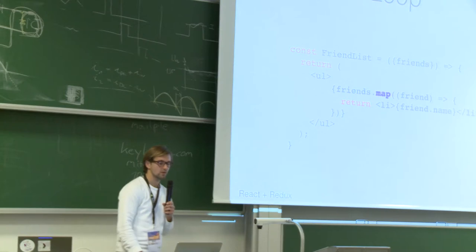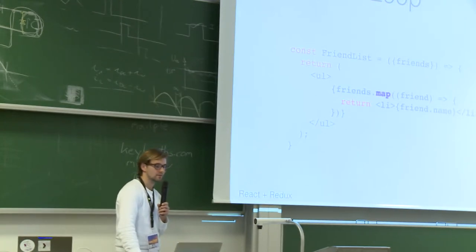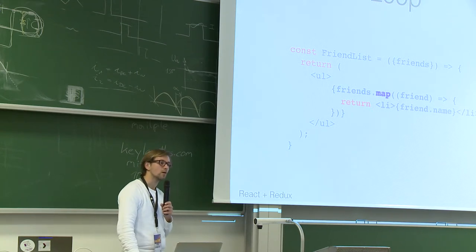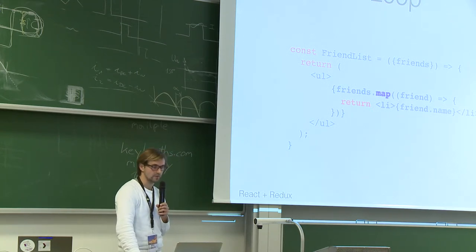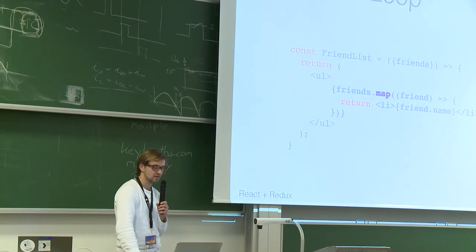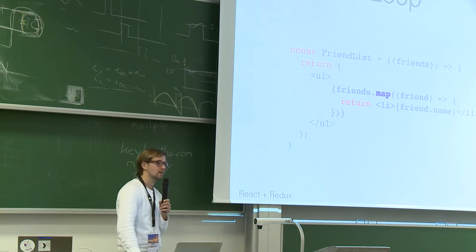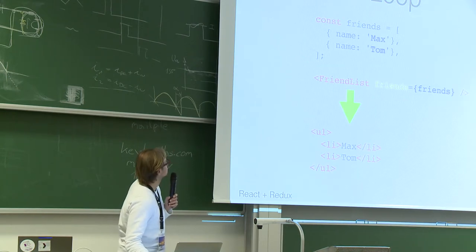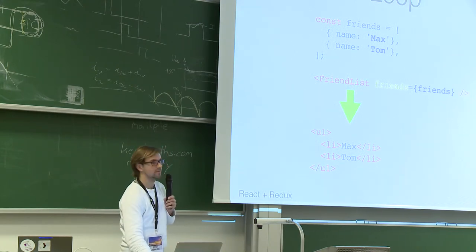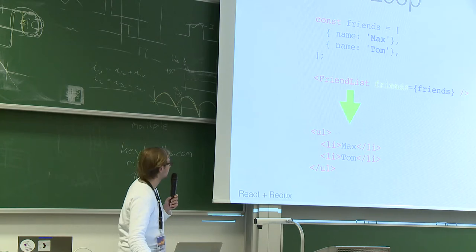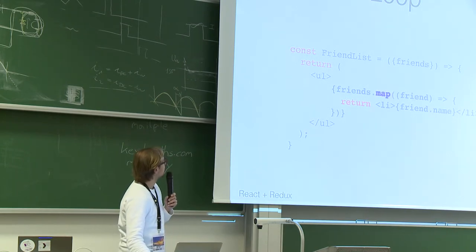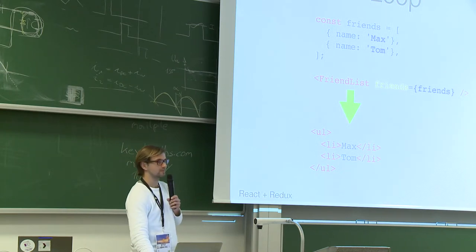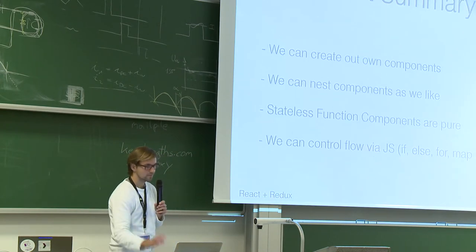You can also do looping. If I have a friends list, I simply map over and iterate over the friends, returning a JSX result each time. In this case I iterate over friends and return list elements. So if you have a friends list with friends Max and Tom, and pass the friends as data to the FriendsList component, you get an unordered list with list elements.